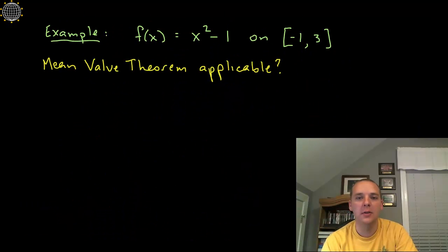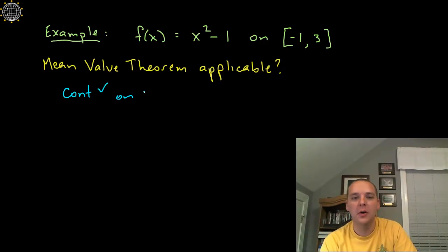Now for this particular guy, he's a polynomial, he's continuous everywhere, there's no breaks or holes or jumps in this guy, so yes, he is continuous, specifically on the closed interval minus 1 to 3 as it asks for.